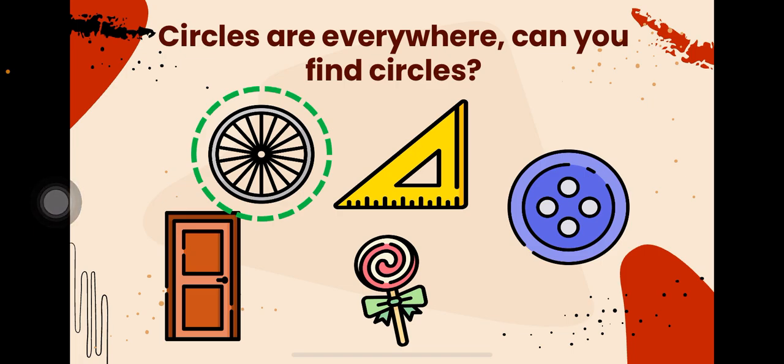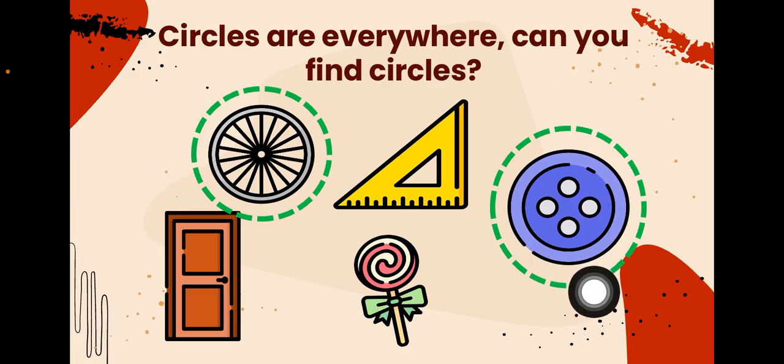So, what else? Yes, a button. It looks like a circle. And a lollipop. This is a round lollipop. It looks like a circle. Very good!